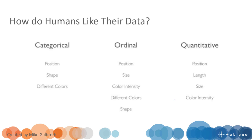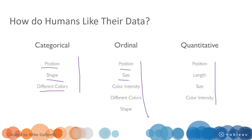Studies show that for different types of data, it is suitable to use certain pre-attentive visual attributes. For categorical data, we can use position, shape, or colors. For ordinal data, we can use position, size, colors, and also shape. For quantitative data, we can use positions, length, size, and also colors.